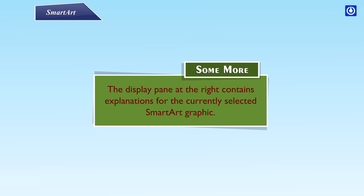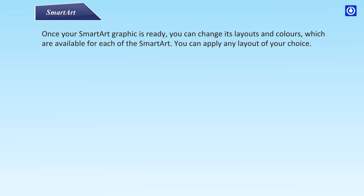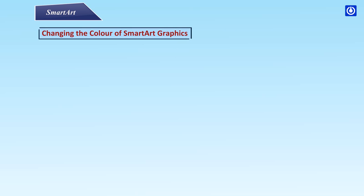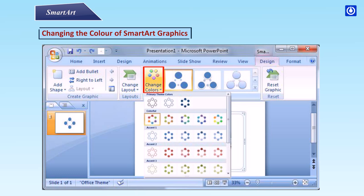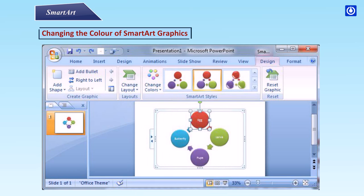The display pane at the right contains explanations for the currently selected Smart Art graphic. Once your Smart Art graphic is ready, you can change its layout and colors, which are available for each Smart Art. Changing the color of Smart Art graphics: Step 1: Select the Smart Art graphic. Step 2: Click on Change Colors and click on the color of your choice from the layout gallery.